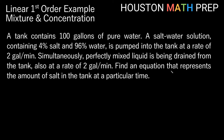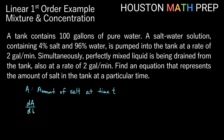We want to find an equation that represents the amount of salt in the tank at a particular time. So we're going to assign — the amount of salt in the tank, we'll call that A. Our capital A is the amount of salt in the tank at time t. We have some stuff entering the tank and some stuff leaving the tank, so what we want to think about is the rate of change with respect to time of the amount of salt in the tank.